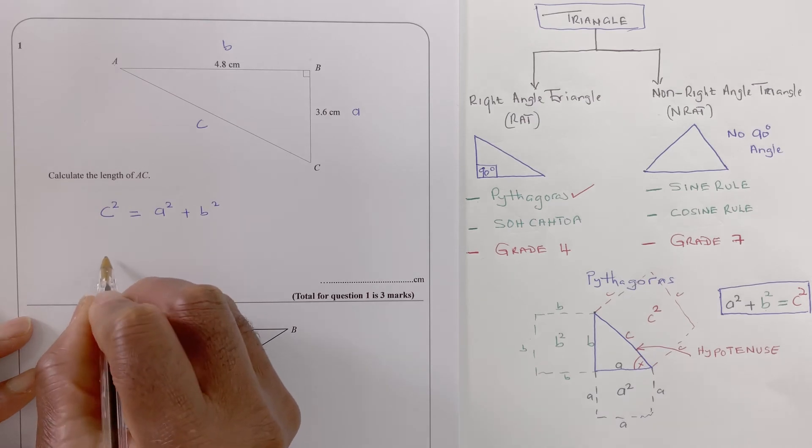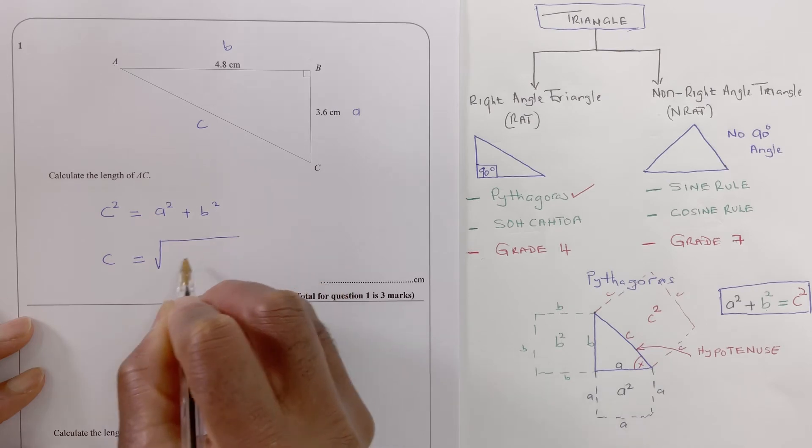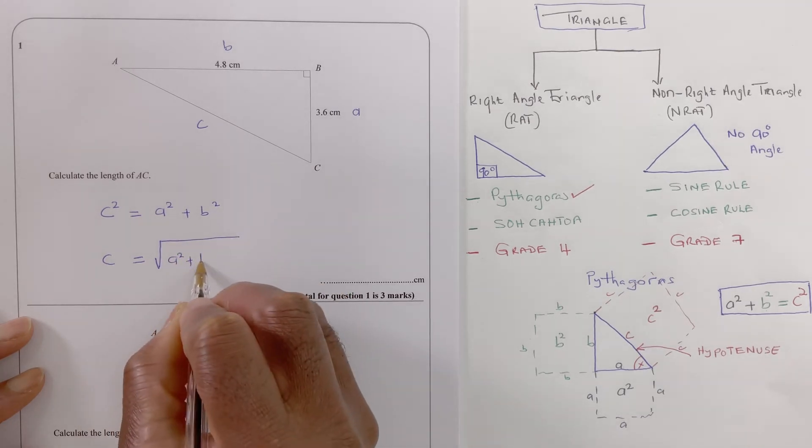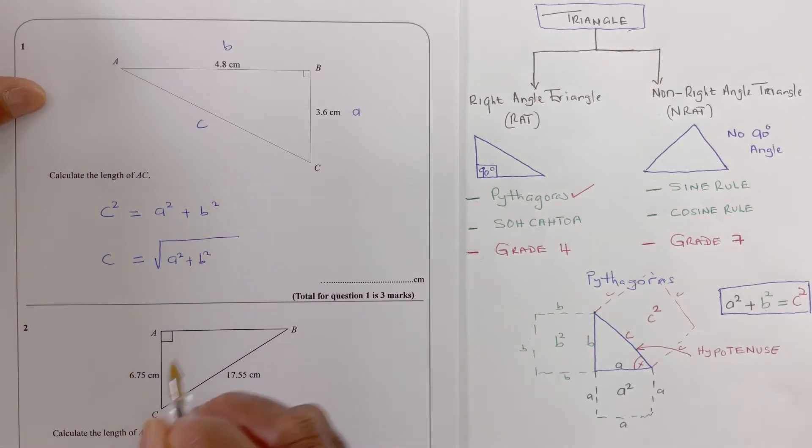c, I need to say c will be equal to square root of a squared plus b squared.